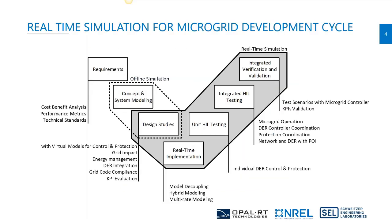I'll start with the typical V-cycle diagram of product development, adapted for microgrid development. We start with gathering requirements from the planning phase, which includes cost-benefit analysis, definition of performance metrics, and technical standards such as IEEE 2030.8.7 and IEC standards for microgrid controllers. The second step is concept and system modeling; the third is design studies, which include modeling controls, virtual models for control and protection, grid impact studies, energy management studies, DER integration studies, grid code compliance studies, and KPI evaluations.